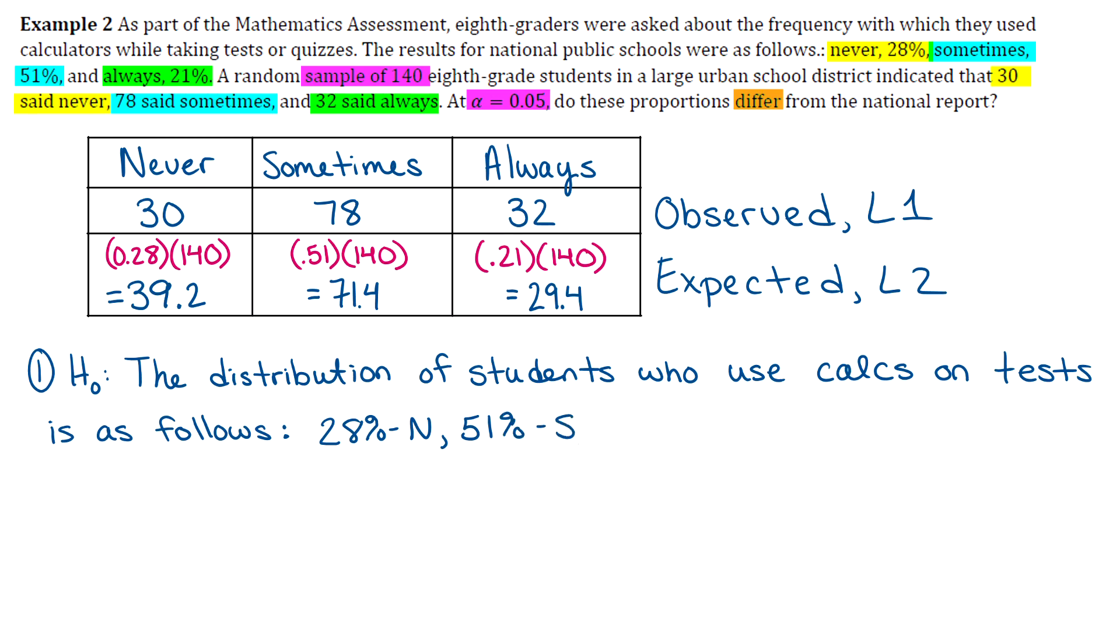So you guys are kind of lucky because you're just going to do this online. So you're just going to probably pick from drop-down boxes. So you don't actually have to know how to write these out yourself. But basically, your null hypothesis, you're always just stating what the distribution is for whatever the circumstance in the question is. So the distribution of blah, blah, blah is as follows. And then you just kind of list what all of those percentages are.